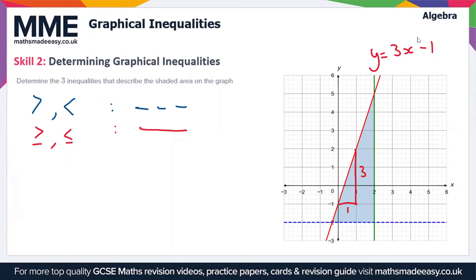We need to write this as an inequality, so the first one is y ≤ 3x - 1. Why is this? Well, first it's a solid line, so it has to be an inclusive inequality. Second, the shaded area is beneath the line, so it has to be a less than inequality.